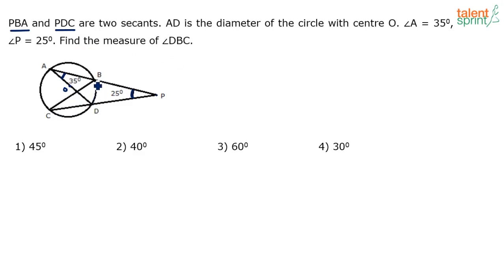Basically, if you see, there is a triangle that gets formed. Let me connect B and D — B and D will act like a chord to this circle. BD is a chord. The question is asking us to find the measure of angle DBC, which is this angle.